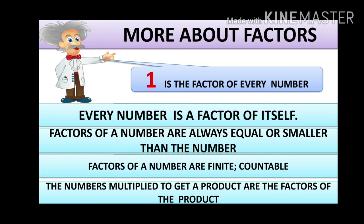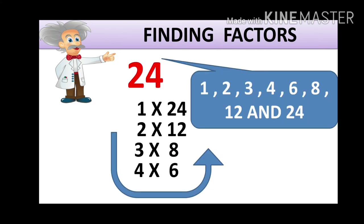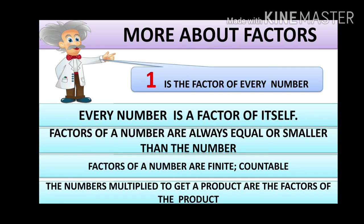Factors of a number are always equal or smaller than the number. Here we can see the factors of 24 are 1, 2, 3, 4, 6, 8, 12, 24. The highest factor here is 24, and all the factors are less than or equal to 24. More than 24 will never appear as a factor. As we saw in the activity for roll number 7, there were 6 apples but he brought 7 baskets — that shows factors must be either equal to or less than the number; they cannot be more.